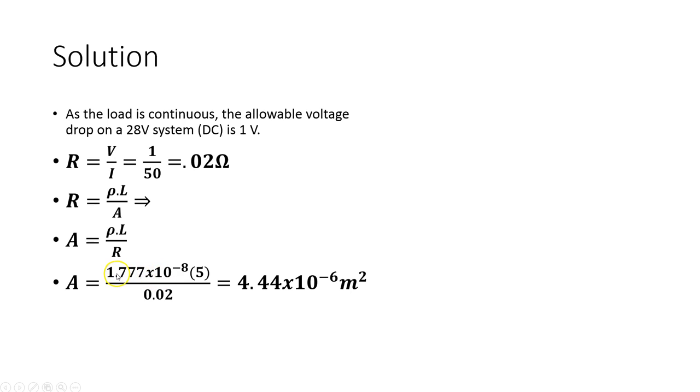So I am going to plug in the values. So we were told it was copper wire. So that was the resistivity of copper. The length of the wire was 5 meters. And the resistance of the wire we deduced up here to be 0.02 ohms. So that works out at 4.44 by 10 to the power of minus 6 meters squared.